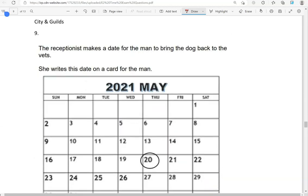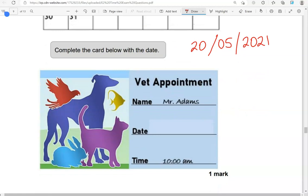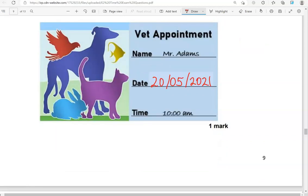The receptionist makes a date for the man to bring the dog back to the vets. She writes this date on a card for the man. Complete the card below with the date. So, this is the 20th of May. May is the 5th month of the year. And then we have 2021. Or just 21 at the end, if you like.